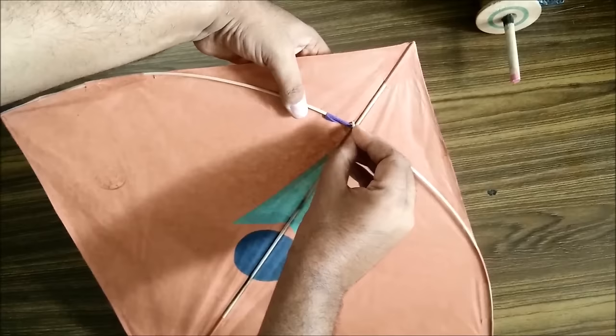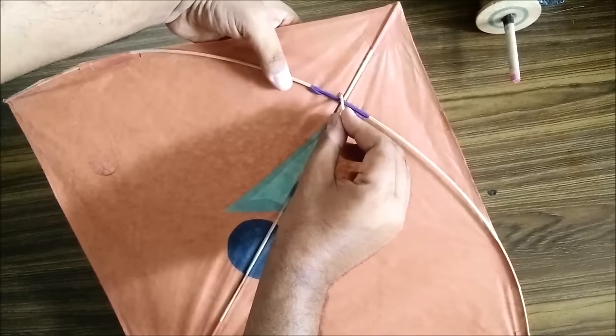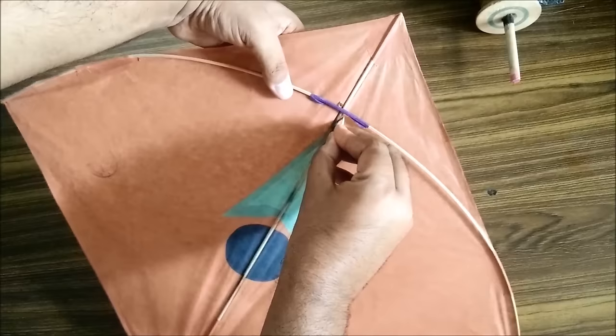So one hole I'll make here. The hole has to be big enough for the thread to pass through it. And the second hole exactly opposite I'll make here.